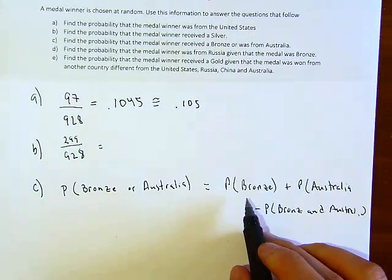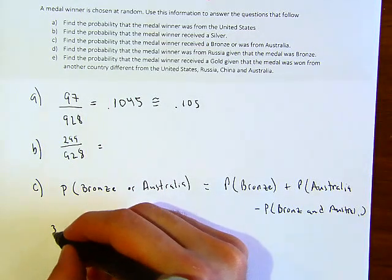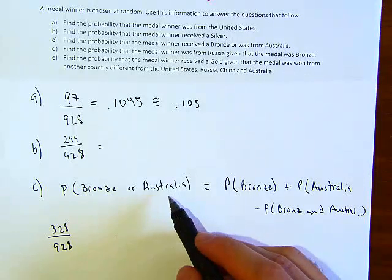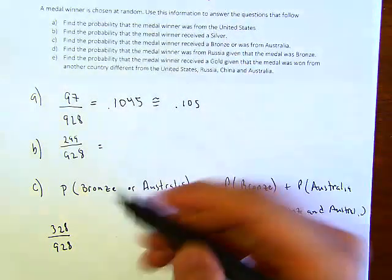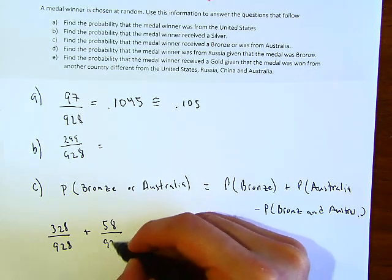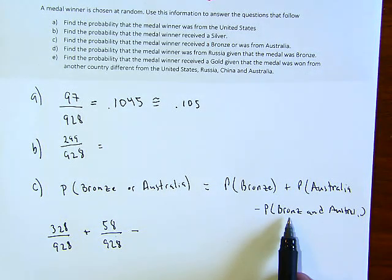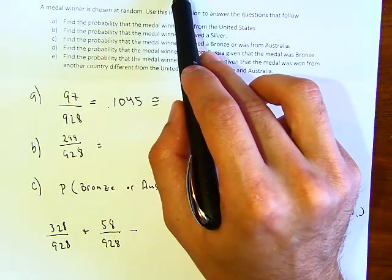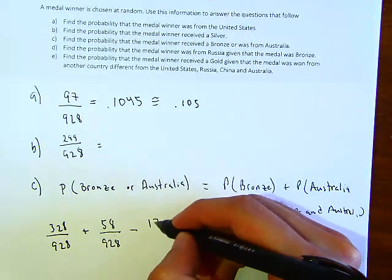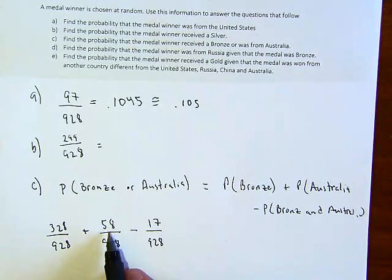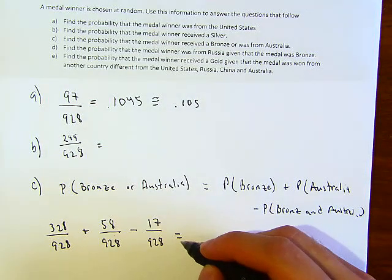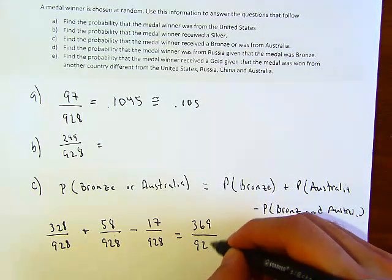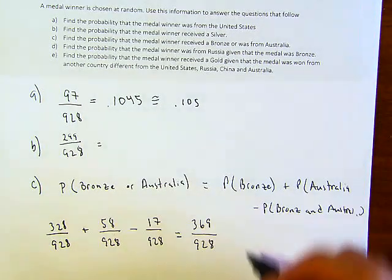The probability of bronze was 328 over 928, because there are 328 bronzes. The probability for Australia was 58 over 928. We also have to subtract all the people from Australia who also received the bronze, which is 17 over 928. If you add those two numbers and subtract 17, you get 369 over 928. That would be your answer for C.